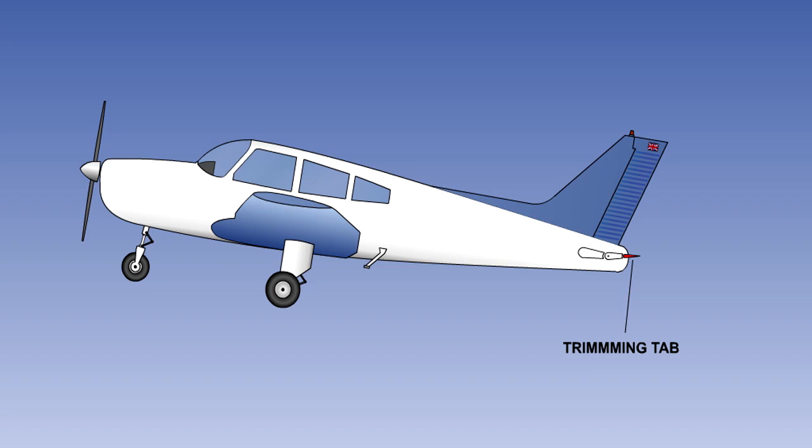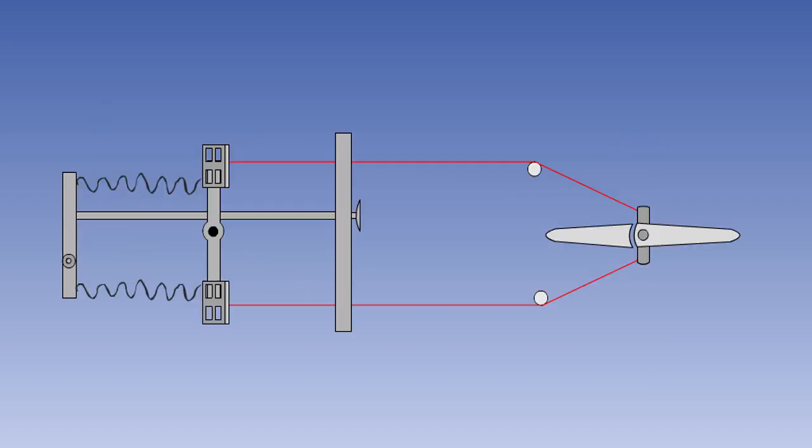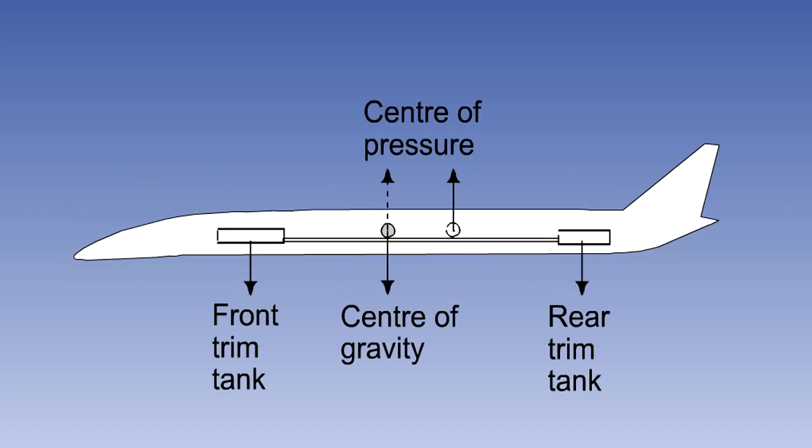The four we are going to discuss are the trimming tab, the variable incidence tailplane, the spring bias system, and centre of gravity adjustment.